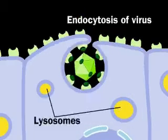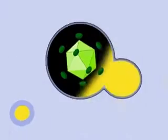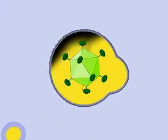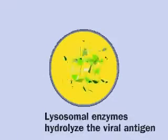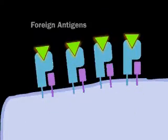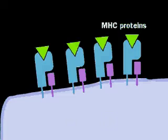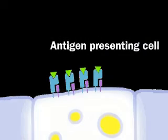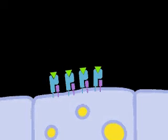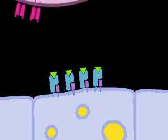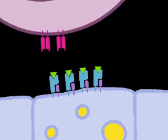A cell infected by a virus may degrade viral proteins. Class I MHC proteins bind bits of viral protein and transport them to the cell's surface for display. A cell displaying such foreign antigens on its MHC proteins is called an antigen-presenting cell. A cytotoxic T cell, or killer T cell, can bind the displayed antigen if the T cell has surface T cell receptors that correspond to a specific antigenic determinant on the displayed antigen.